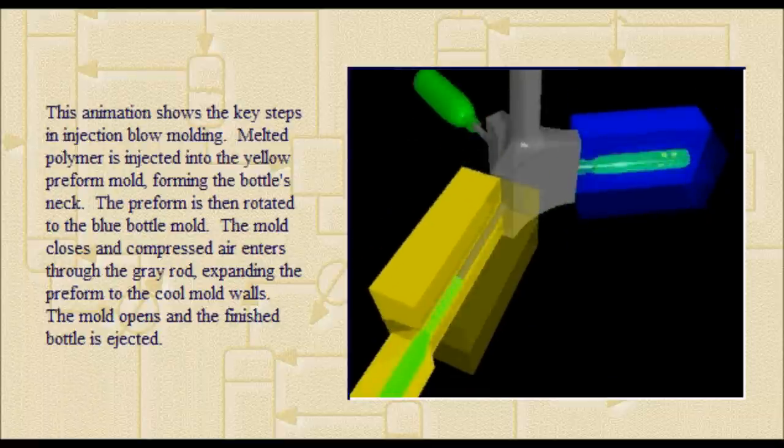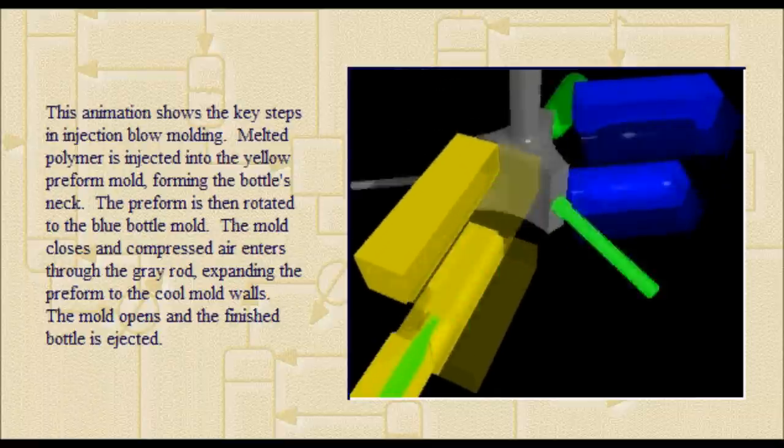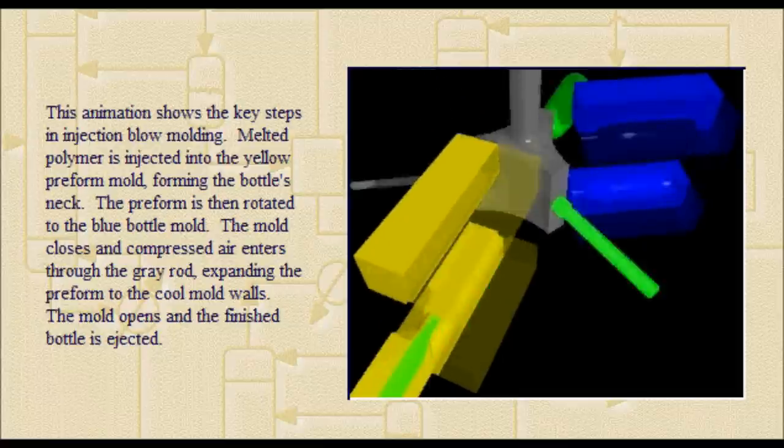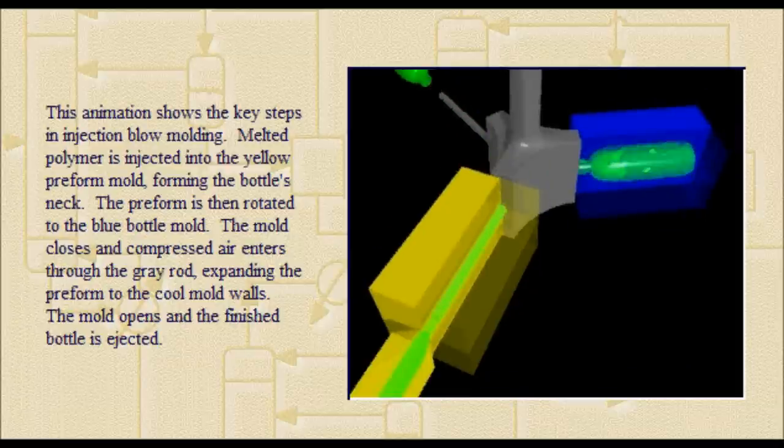This animation shows the key steps in injection blow molding. Melted polymer is injected into the yellow preform mold, forming the bottle's neck.